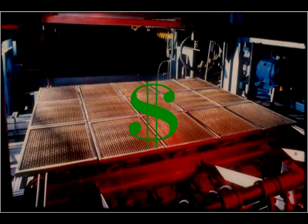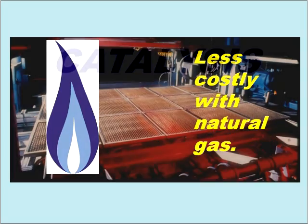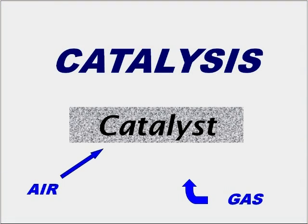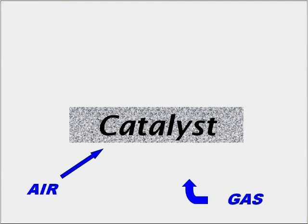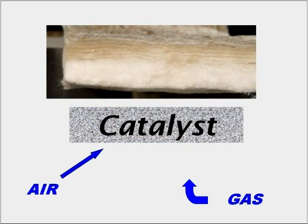Natural gas is a less costly source of energy and can be used in two ways to generate heat: by combustion flames, as in the case of high radiant heaters, or by a chemical oxidation process known as catalysis, which is the basis for the operation of catalytic heaters.